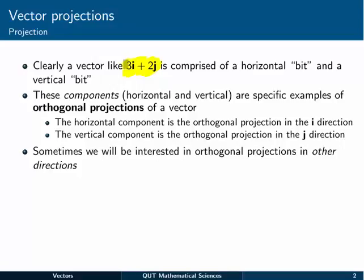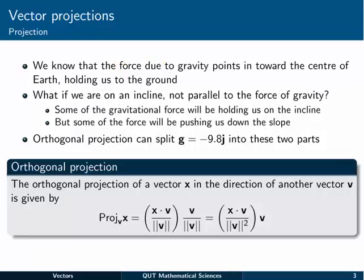Sometimes we'll be interested in orthogonal projections in other directions, for example in tangential directions to motion, and maybe normal directions to motion. Let's think of an example here. We know that the force due to gravity points in towards the centre of the Earth, holding us to the ground basically. What if we were on an incline, rather than just on flat ground?